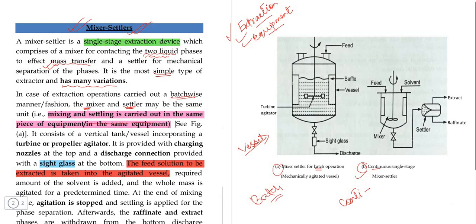It consists of a vertical tank — a vertical vessel. This is what is called vertical. The material is called vertical, not horizontal.